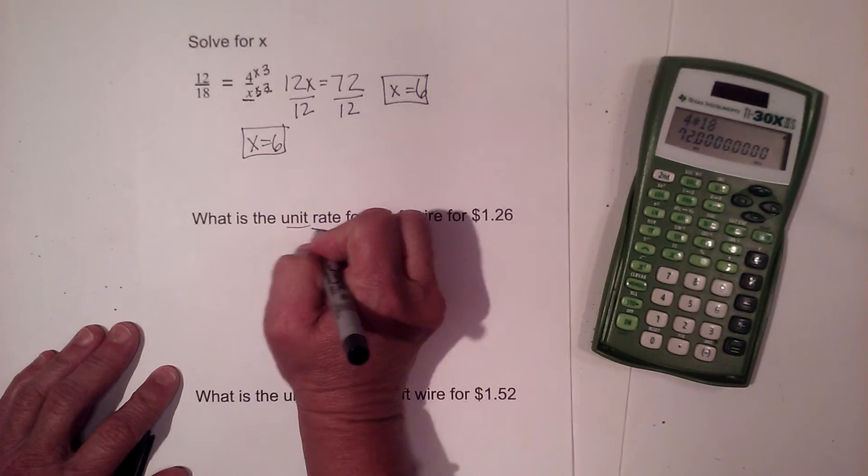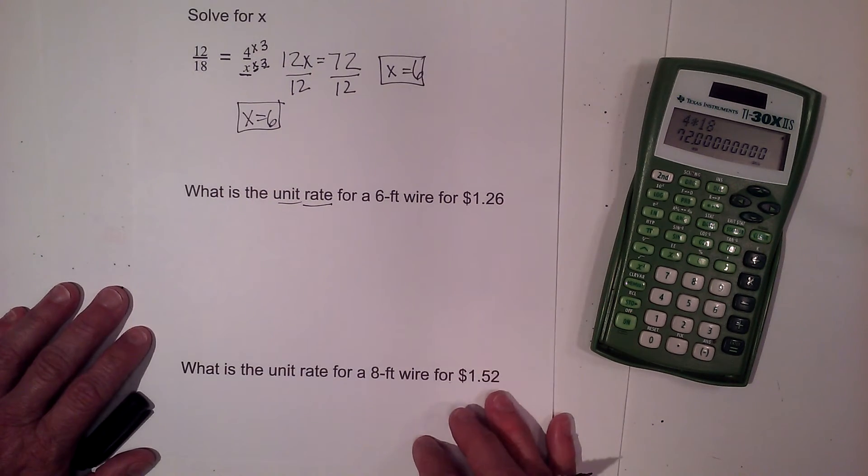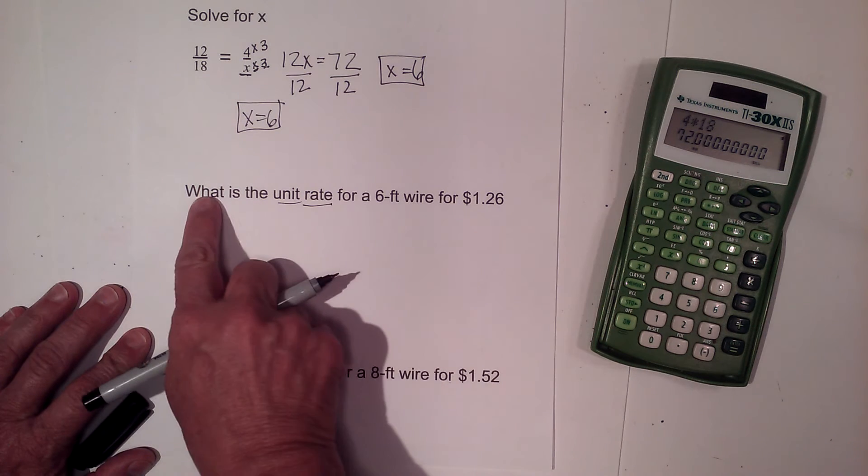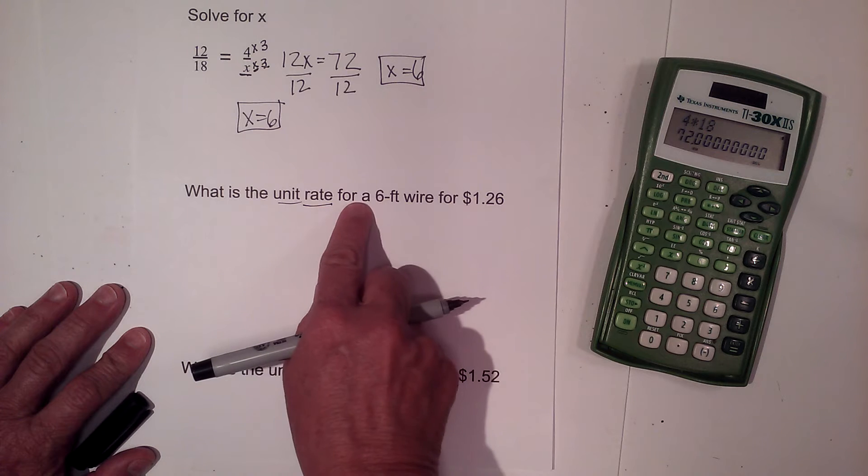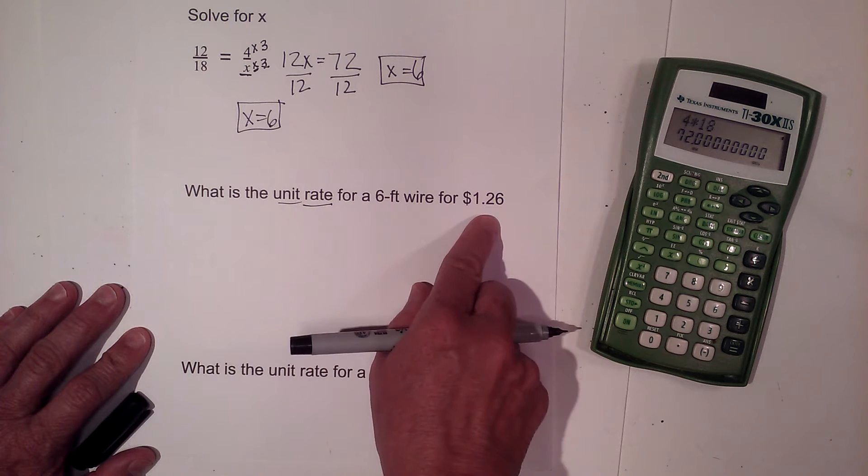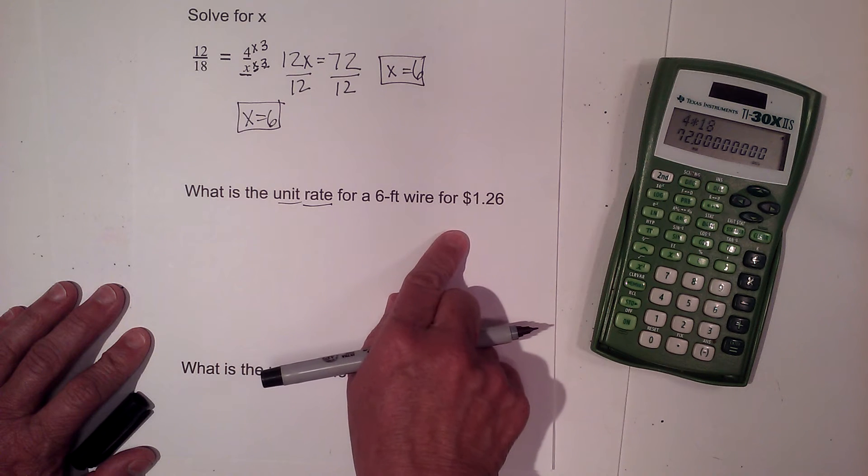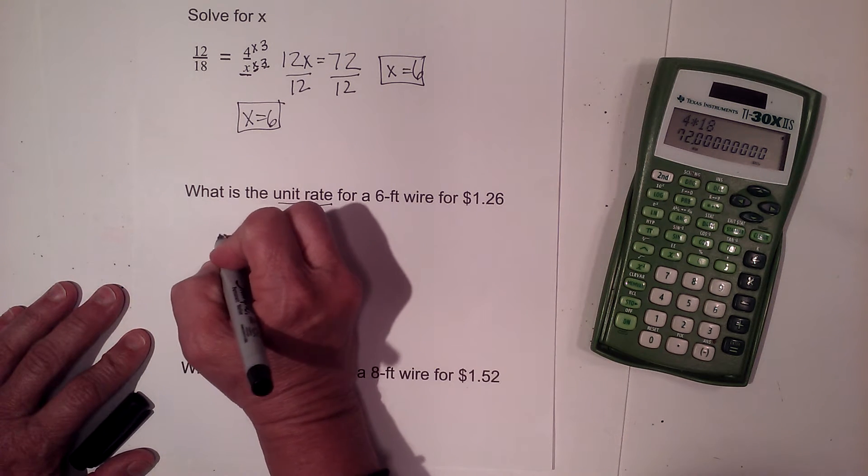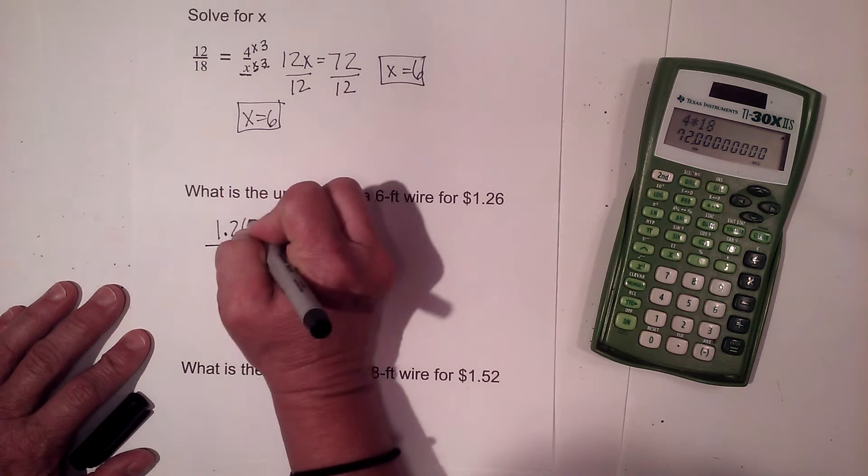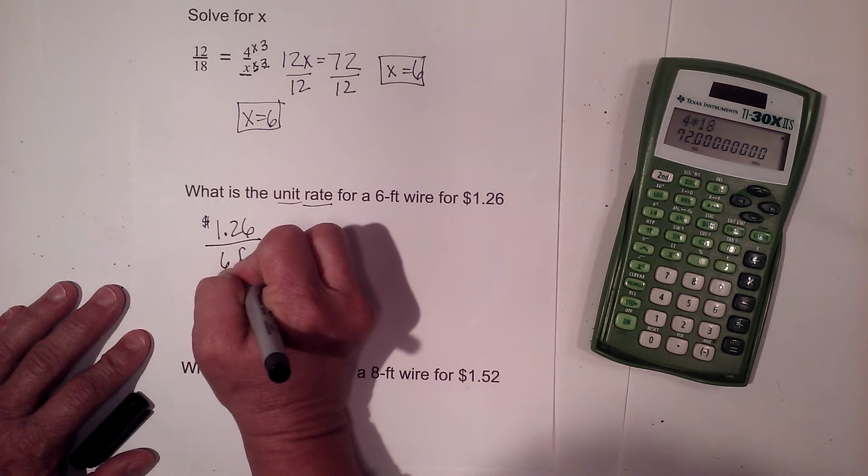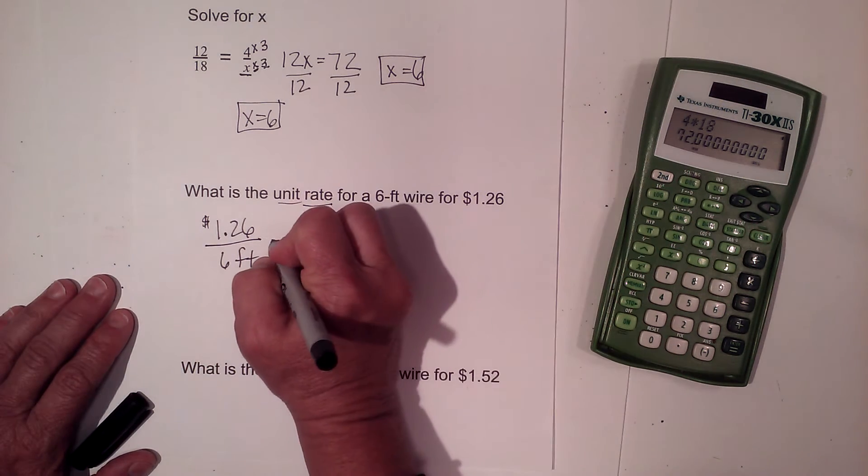Now let's look at a unit rate problem. A unit rate problem is when you're always comparing to one unit of something. So let's look at this one. What is the unit rate for a 6 foot wire that costs $1.26? So I am going to make this into a proportion.